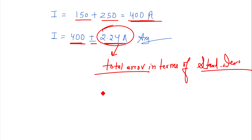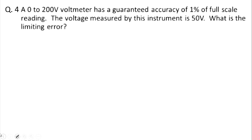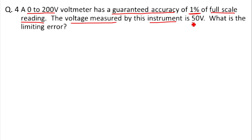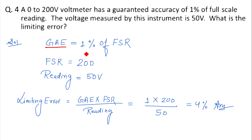Let's look at the next question. In this question, a voltmeter of range 0 to 200 volts is given. The guaranteed accuracy error given is 1% of full scale reading. The voltage measured by this instrument is 150 volts — sorry, the reading is 50 volts — and we have to find the limiting error. I have done similar questions before. Pause the video and try to attempt this question yourself first.